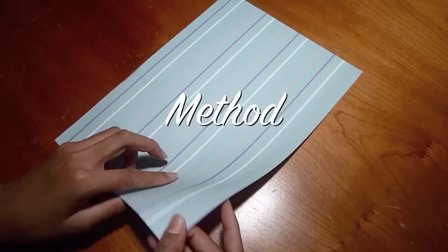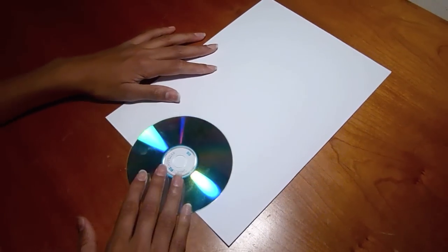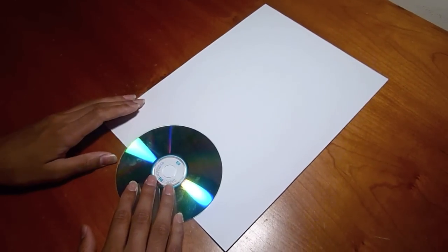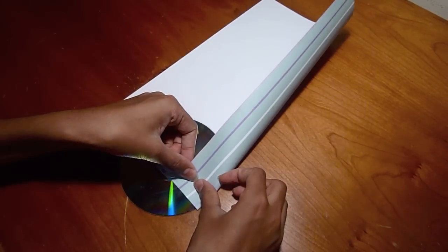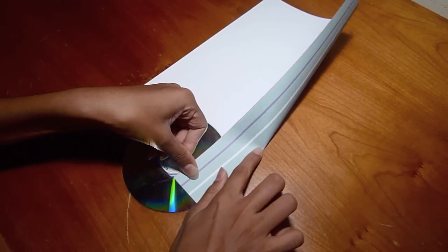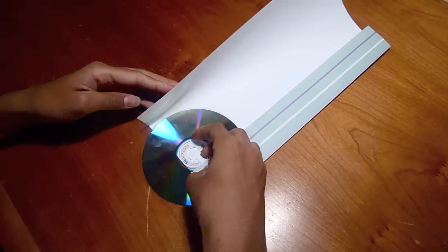What you want to do is flip your decorative paper over, lay your CD down in the bottom center of your page and then you want to score the side of your paper up. Try and get a straight, clean edge.